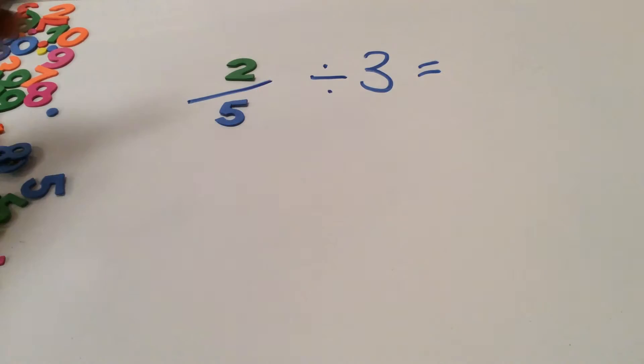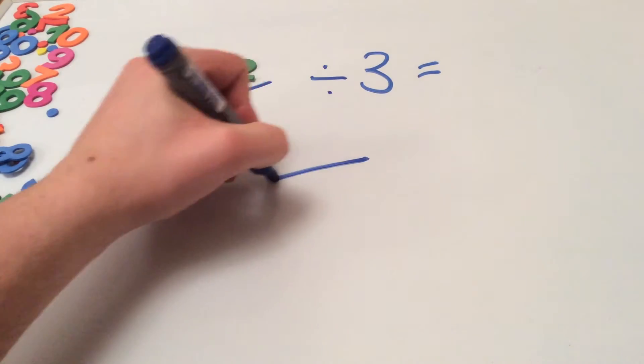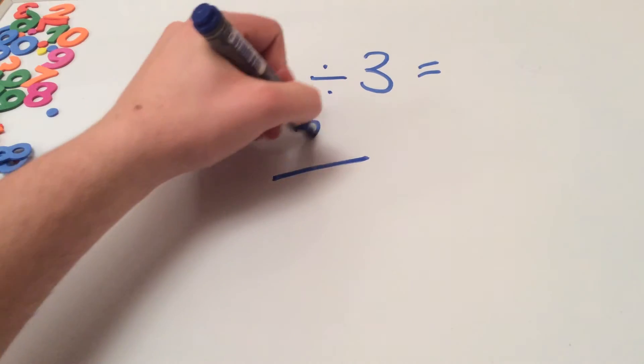Our next example is 2 fifths divided by 3. So we already know that the numerator in our answer will stay the same so it's going to be 2.